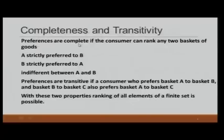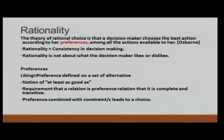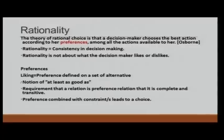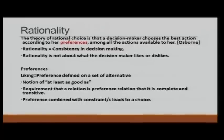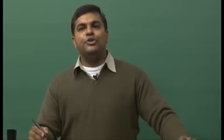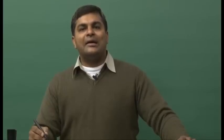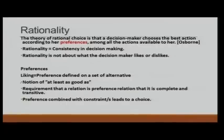What do we mean by preference? Basically, rationality is about consistency in decision making. Rationality does not mean that a person likes one thing over another — it is not about likes and dislikes, it is about consistency in decision making. The term preference gives us the notion of 'at least as good as.' For example, when I say I prefer coffee to tea, what I mean is that I like coffee at least as much as tea, but not tea as much as coffee. So, preference is a relation that gives us the notion of 'at least as good as.'